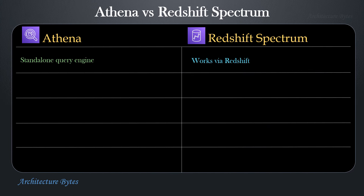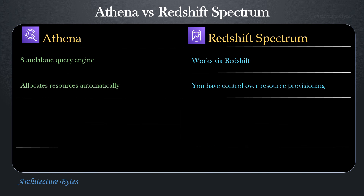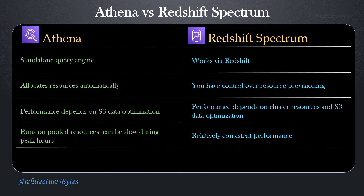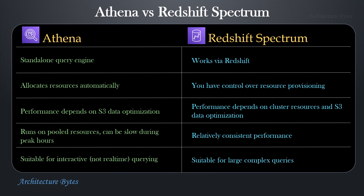While both Athena and Redshift Spectrum can be used to query data on S3, let's look at some of the differences. Athena is a standalone query engine, while Spectrum needs Redshift. In Athena, resources are allocated automatically with a truly serverless architecture, while in Redshift Spectrum, you can exercise control over resources. Athena's performance mainly depends on S3 data optimization, while Redshift Spectrum depends on cluster resources and S3 data optimization. Since Athena runs on pooled resources, it can be potentially slow during busy hours, while Redshift Spectrum can provide relatively consistent performance. Athena is suitable for interactive queries, while Redshift Spectrum can be deployed for large, complex queries.